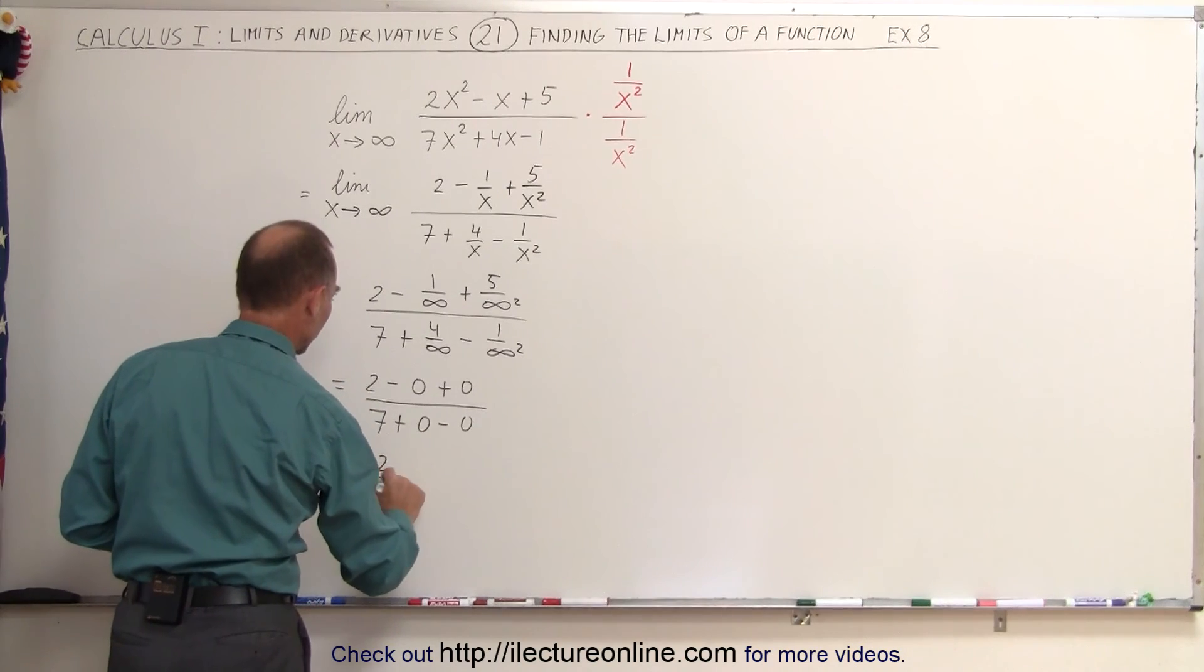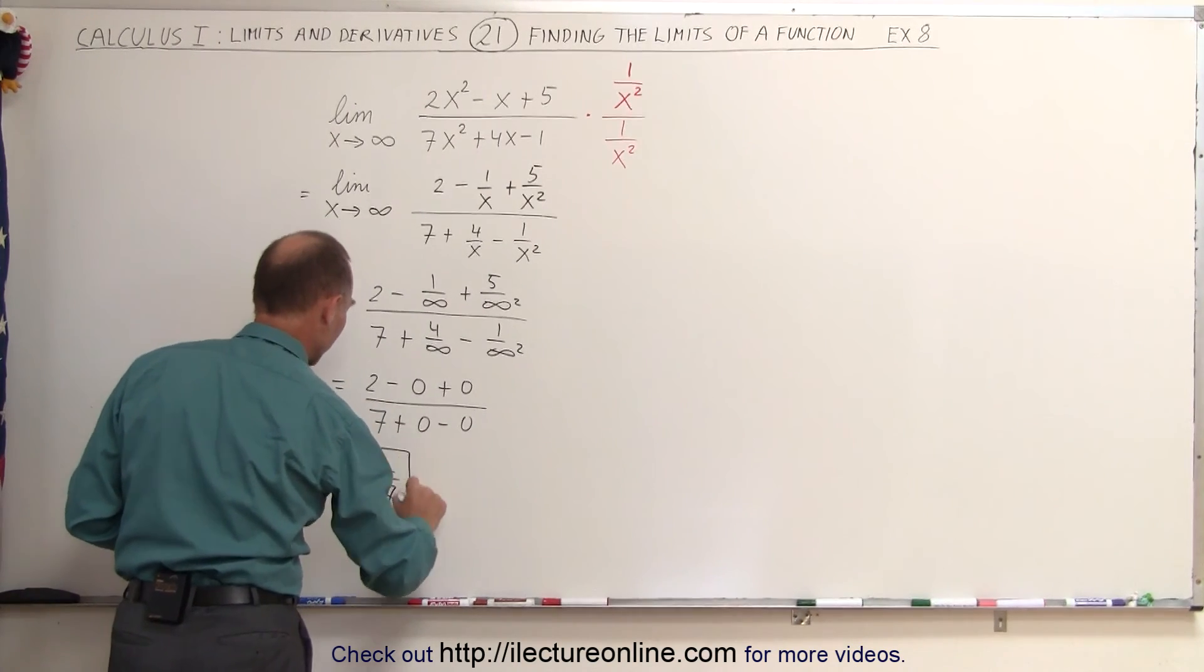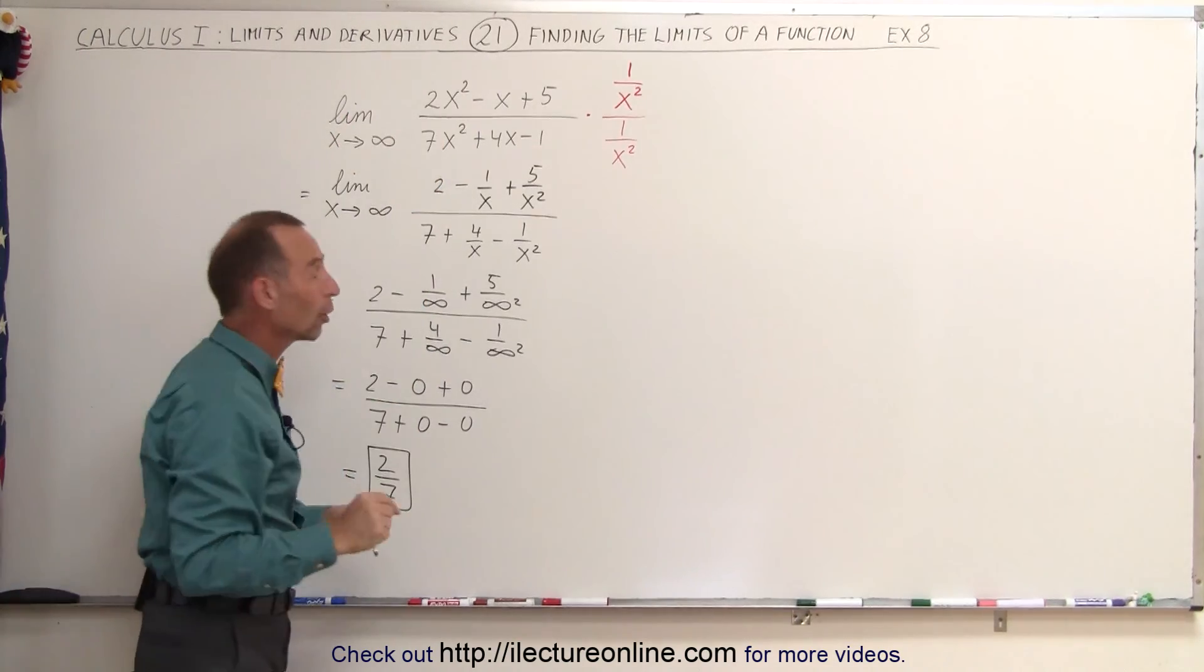So this becomes 2 minus 0 plus 0 divided by 7 plus 0 minus 0. Of course, that's simplified to 2 divided by 7. And that is the limit of this expression when we let x go to infinity.